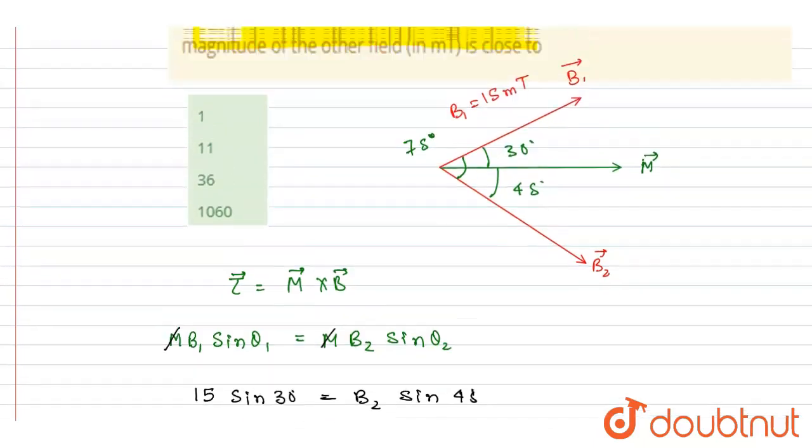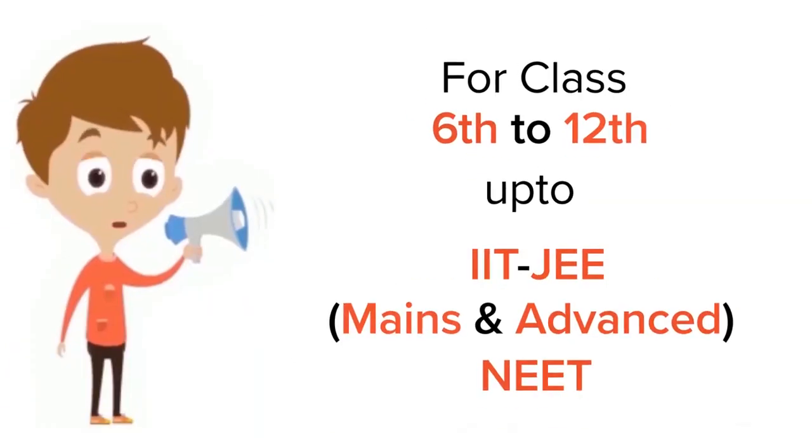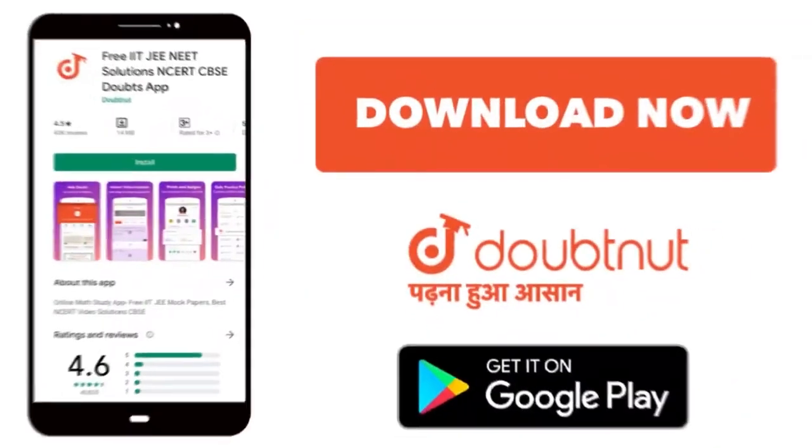In the question we wanted B2 in milliTesla and we got 11, so B is the correct answer. Thank you. For class 6 to 12, IIT-JEE and NEET level, trusted by more than 5 crore students, download Doubtnut app today.